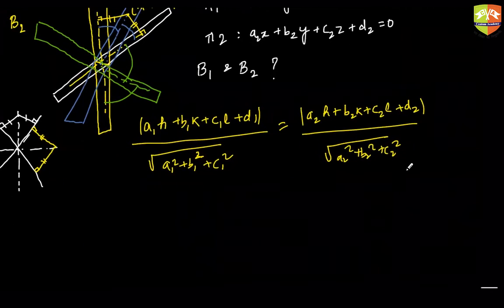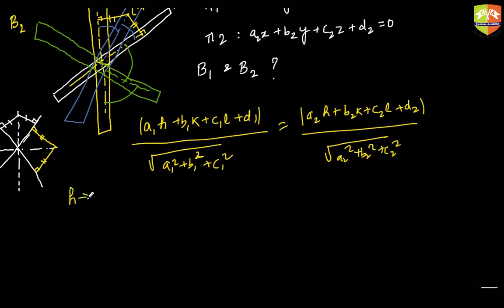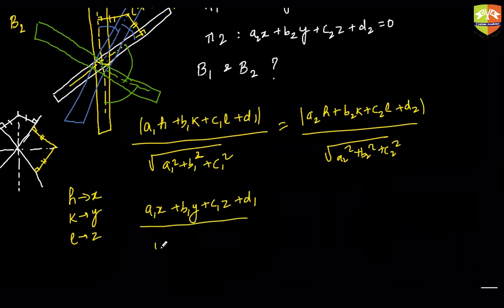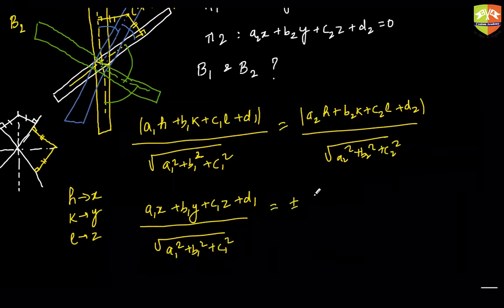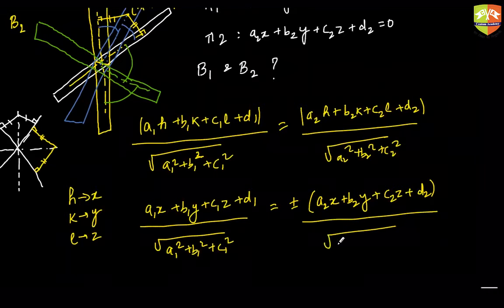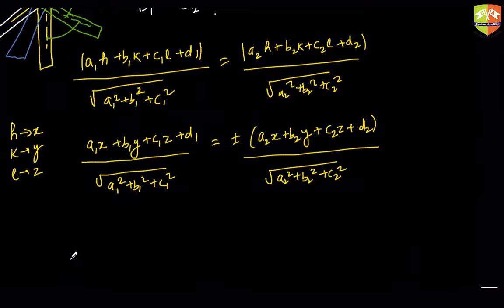Now drop the mod from both sides and generalize by replacing h with x, k with y, and l with z. You will end up getting: (a1·x + b1·y + c1·z + d1) / √(a1² + b1² + c1²) = ± (a2·x + b2·y + c2·z + d2) / √(a2² + b2² + c2²). The ± means there are two equations possible, giving you both equations of bisectors B1 and B2.